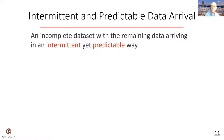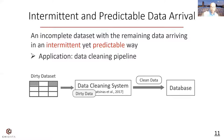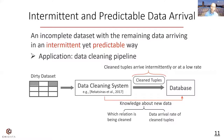Specifically, we consider an incomplete dataset with the remaining data arriving in an intermittent but predictable way. Let's look at a complete data cleaning pipeline example. In this pipeline, the data cleaning system first splits the dirty dataset into two parts: clean data and dirty data. The clean data is first loaded into the database and ready for query, and the data cleaning system cleans the dirty data to output cleaned tuples. Because the data cleaning process is time-consuming, the cleaned tuples will arrive at a low rate or intermittently. The database knows information about the new data, like which relation is being cleaned and the data arrival rate of the cleaned tuples.